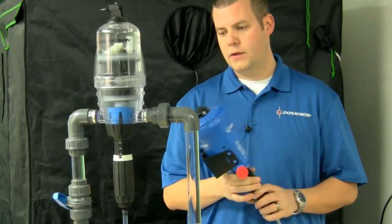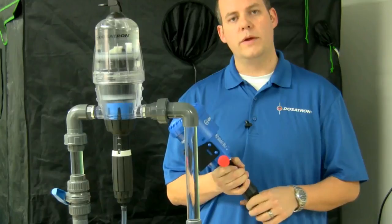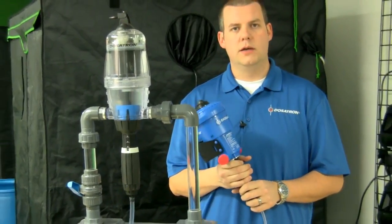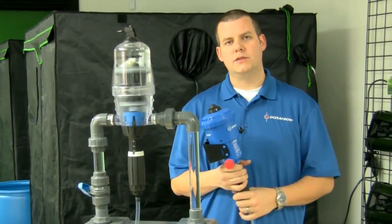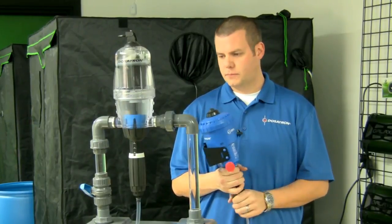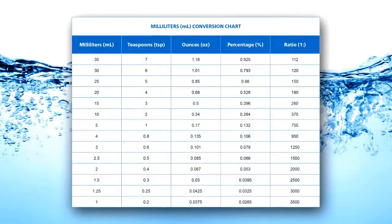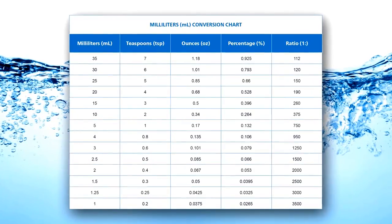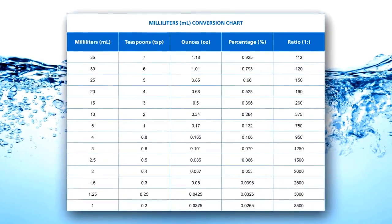Now all of the Dosatrons are going to come in what we call ratio and percentage. So we've translated that into milliliters per gallon or teaspoons per gallon. Each unit will come with a sticker right on the unit that will break that conversion down and make it easier to do the math.